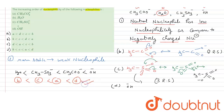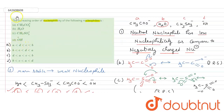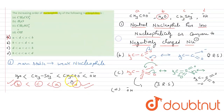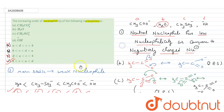So D has the highest nucleophilicity and B has the lowest. Checking the options: A, B, and C are wrong. The correct answer is option D, which gives the correct increasing order of nucleophilicity for these nucleophiles. Hope this answered your question. Thank you.